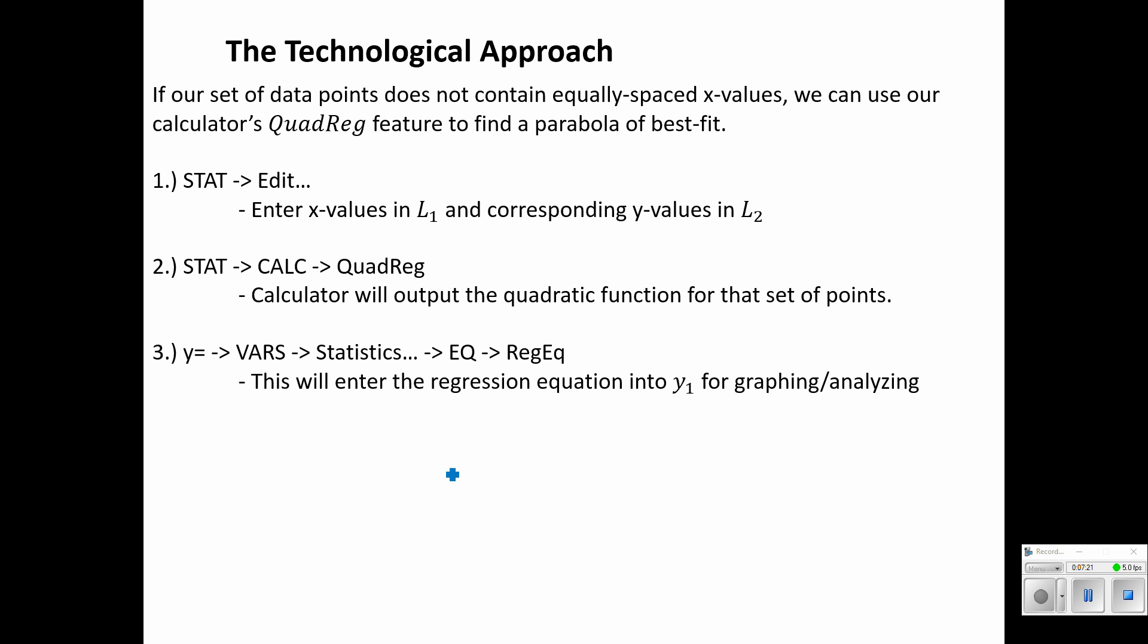Now, if we don't have equally spaced x values, or we're allowed to use a calculator, we used a linear regression in chapter one. The calculator also has a quadratic regression. So we'll enter our points in the stat menu. We'll probably plot the points somewhere in there just to see if it looks like a parabola. Then it might look like a line, we don't know. But see what those points look like. If it looks like a parabola, then we can use quadratic regression. And then we can use the graphing menu, the y equals menu to see that graph and then analyze it from there.